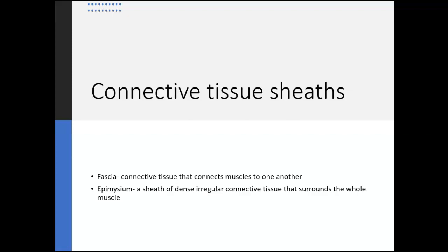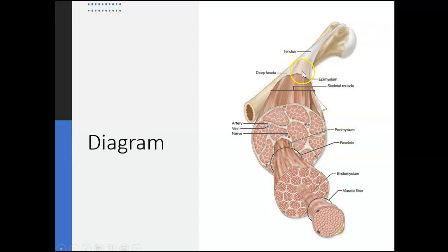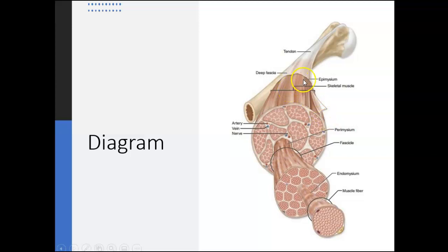If we remove the fascia, we'll notice there are other connective tissues surrounding your muscles. Underneath the fascia, you're going to find another connective tissue called the epimysium. The epimysium is a sheet of dense, irregular connective tissue that surrounds the whole muscle. So the fascia connects one muscle to another, while the epimysium surrounds this one individual muscle.